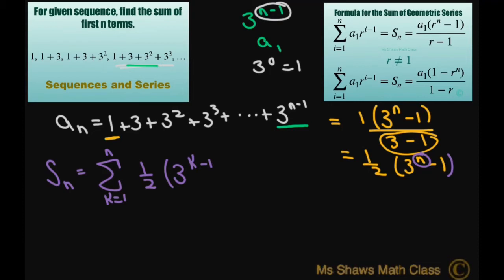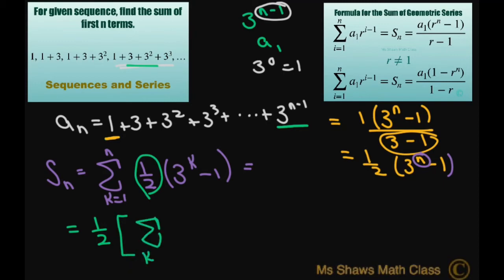That's minus 1 in the exponent — sorry for the clarification. If I separate this out, I'm going to pull the one half out front, and then write the sum from k equals 1 to n of 3 to the power of k.